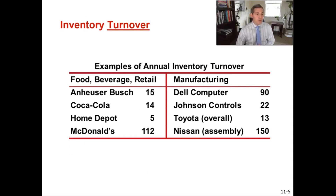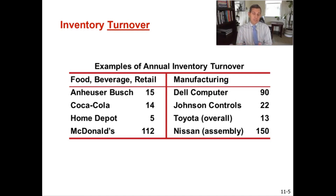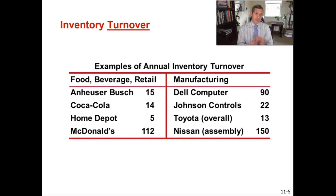Home Depot turns over their inventory five times per year. With 12 months per year and five inventory turns, they're turning over their inventory every nine or ten weeks. For them that's not critical — lumber doesn't expire and tiles don't go obsolete in nine weeks. McDonald's, on the other hand, has 112 inventory turns per year. With 365 days per year, that means every three to four days their inventory is turning over, which makes sense because they can't keep lettuce, tomatoes, and bread in stock for very long before it expires. That's the difference between a retailer like Home Depot with a lower inventory turn versus a restaurant like McDonald's at 112.